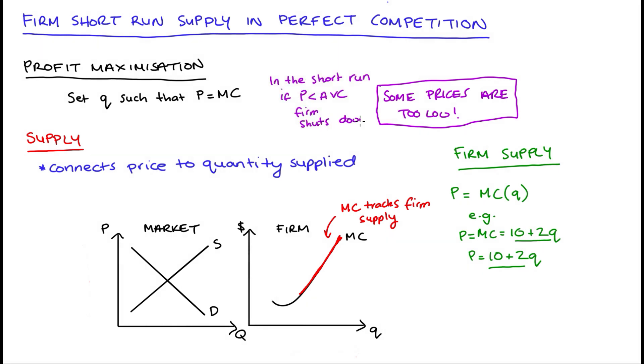Now, if price is less than average variable cost, the firm will shut down and q will be equal to zero. Basically, in these cases, the firm can't cover its variable costs, which is really its lowest threshold in the short run, given that fixed costs are sunk.